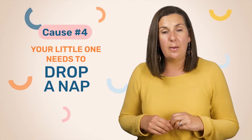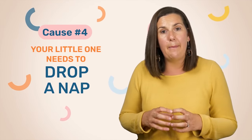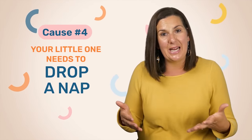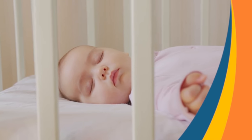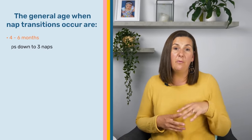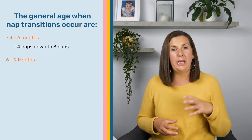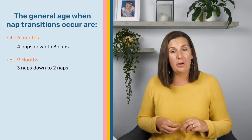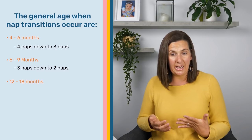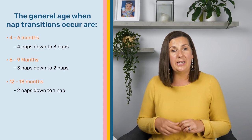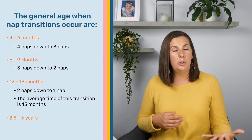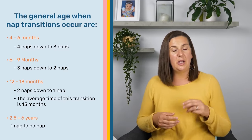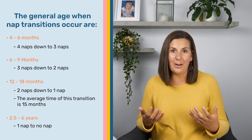Your little one's sleep can also become disrupted if they have retained a nap but no longer need it in their day. Babies generally go through nap transitions at predictable ages: from four to six months they go from four naps down to three; six to nine months, three naps down to two; 12 to 18 months, two naps down to one, with the most common drop age being around 15 months; and from two and a half up to six years of age, they go from one nap down to none.